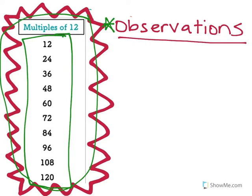First, I'm going to look at the ones place because I think that's a good place to start. Looking at the ones digits, I have 2, then 4, 6, 8 — I'm counting by twos! If the pattern continues, the next number should be 10, and we have a zero, which works because when you add 2 to 8 you get 10 — you just have to carry a 1 to the tens place.